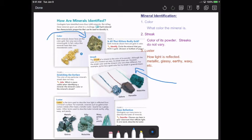Last over here is luster. Luster is usually describing how it's reflected. So some are metallic like gold, some look glassy, earthy, waxy even. So they have all different types of ways that the luster comes out.